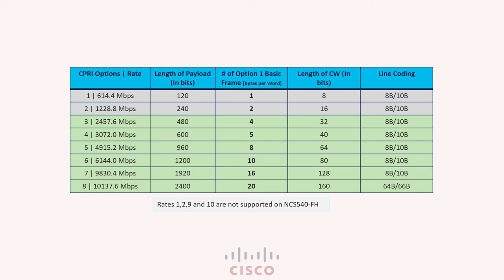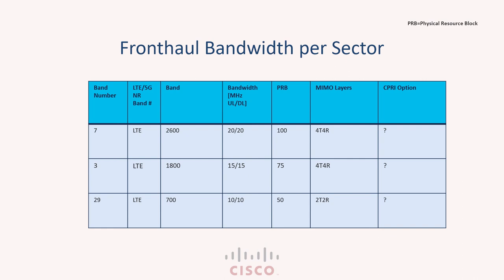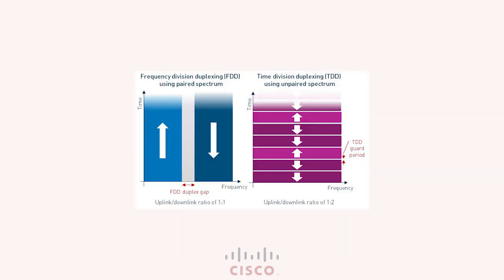Now that you have a decent understanding of CPRI, let us jump into how we can calculate the CPRI rate based on the RAN information that we get from the customer. The RAN information is essentially radio resources that we need to digitize and insert into a CPRI-based bitstream between the RE and REC. Today's video is based on 4G, so the frames we'll talk about will essentially be LTE frames. LTE uses both frequency division duplex and time division duplex to allocate radio resources between the user equipment and the antenna, but we will focus on FDD for this lecture.